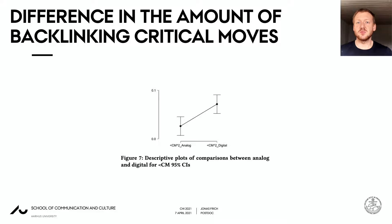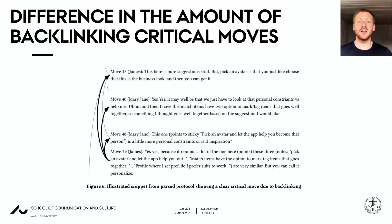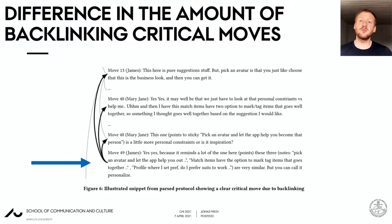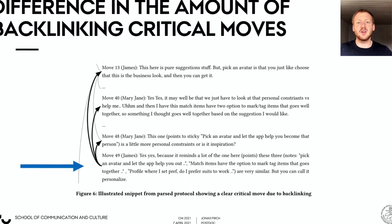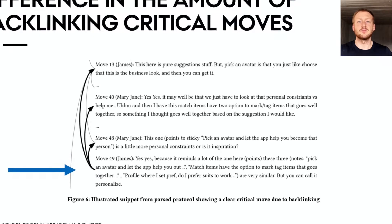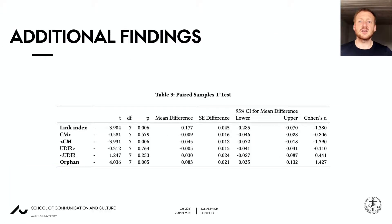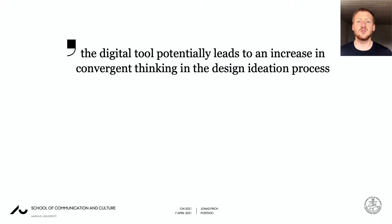We found a large difference between the two conditions in the amount of back-linking critical moves. Here you see an example of this in the case of move 49, which summarizes and draws upon three previous design moves, thereby making it a critical move in the design session due to its back-linking nature. We explored additional features of the protocol to reach the conclusion that a digital tool designed to support current design practices potentially leads to an increase in convergent thinking compared to the existing analog practice. We also didn't find a significant difference in divergent thinking, which might be due to a relatively small sample size, but may also indicate the dual nature of design ideation, where both are simultaneously occurring phenomena.